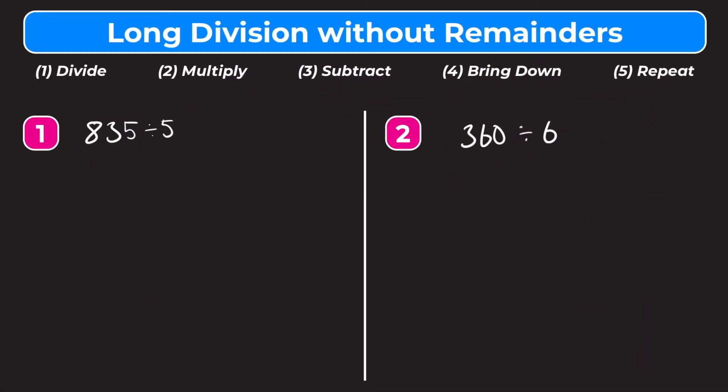In today's video we're going to learn how to do long division without remainders. Long division is basically a way to do division that allows us to divide bigger numbers without using a calculator. There are a couple steps to remember: step one is divide, step two is multiply, step three is subtract, step four is bring down, and step five is repeat. Let's try number one: 835 divided by 5.